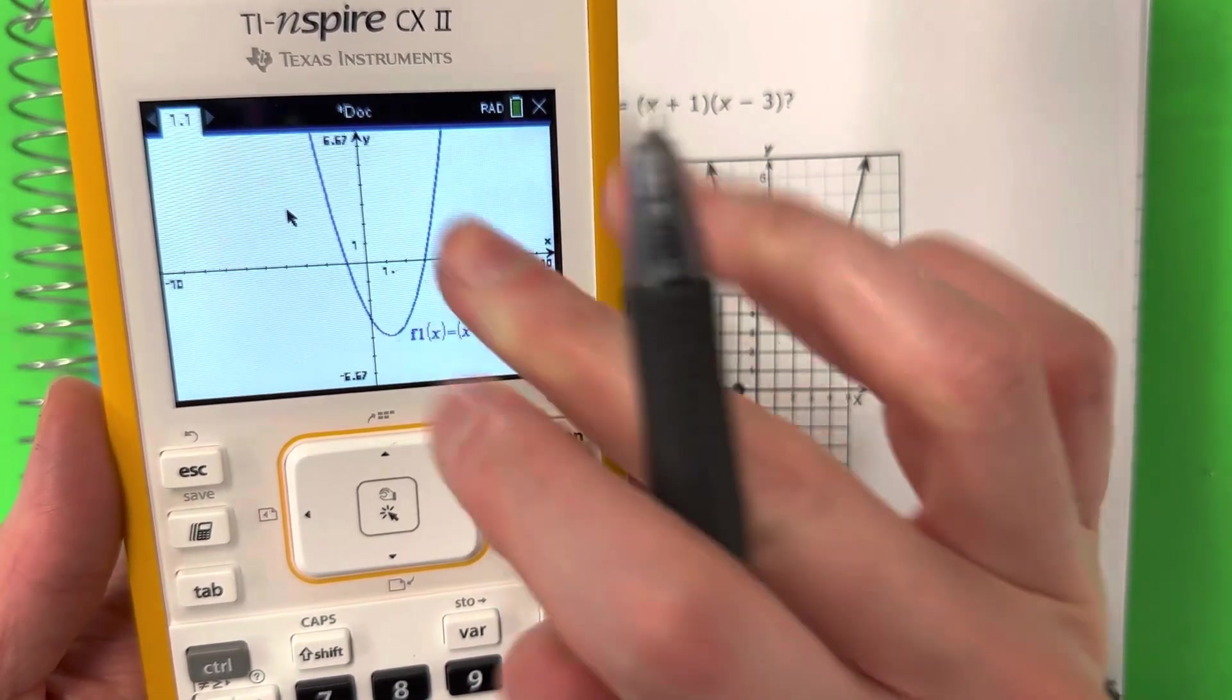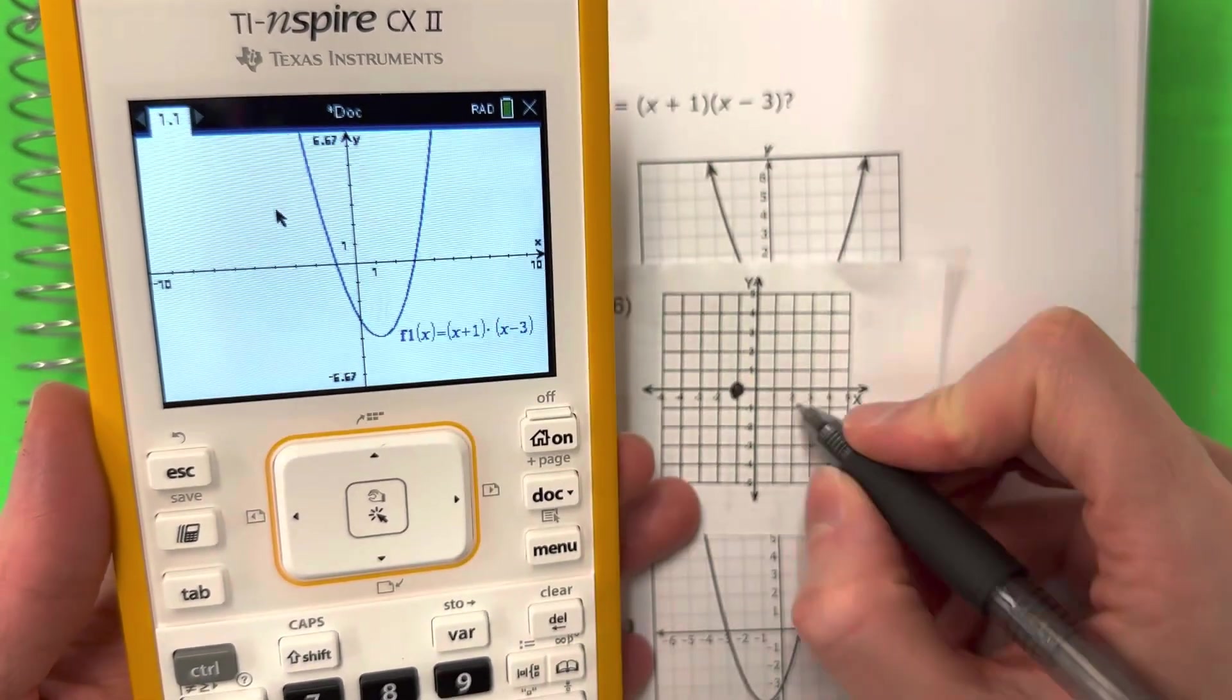it looks like it's on 3, right? So 1, 2, 3. So go ahead and put 3. And then the y-intercept,